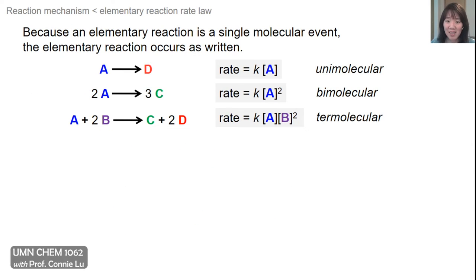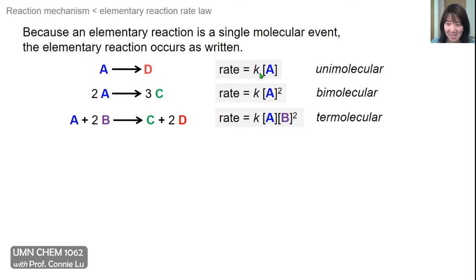Here's how to write a rate law for an elementary reaction. One important thing to be mindful of is that elementary reactions are written as they happen — representing a single molecular event. In this first example, A converts to D in one step. The rate law is: rate equals the rate constant times the concentration of A to the first power. We know it's first order with respect to A because that's how it's written — one A goes to one D. This is an example of a unimolecular reaction because there's only one concentration term in the rate law.